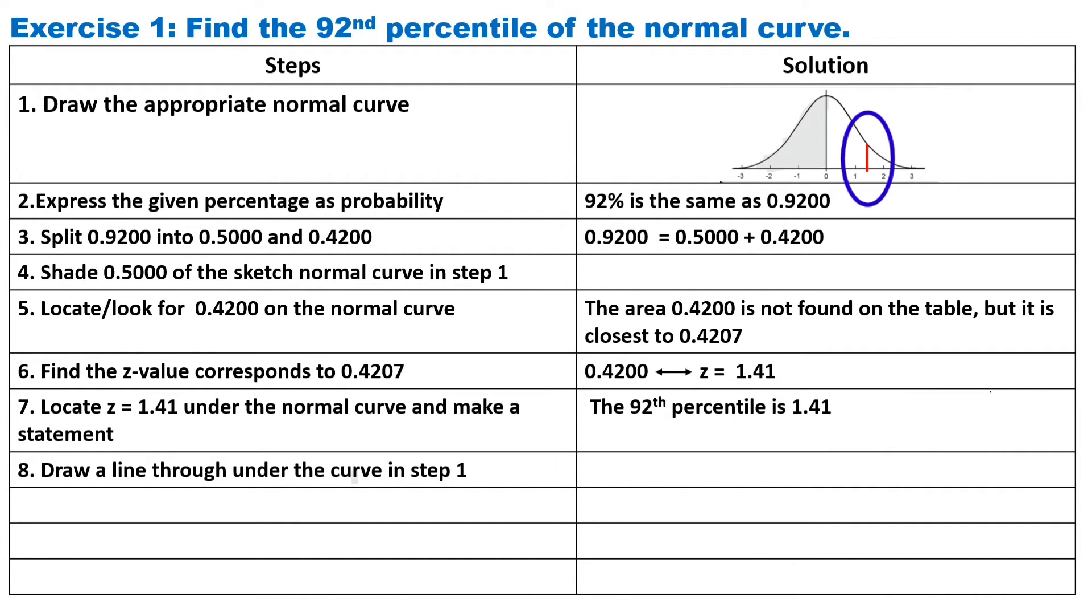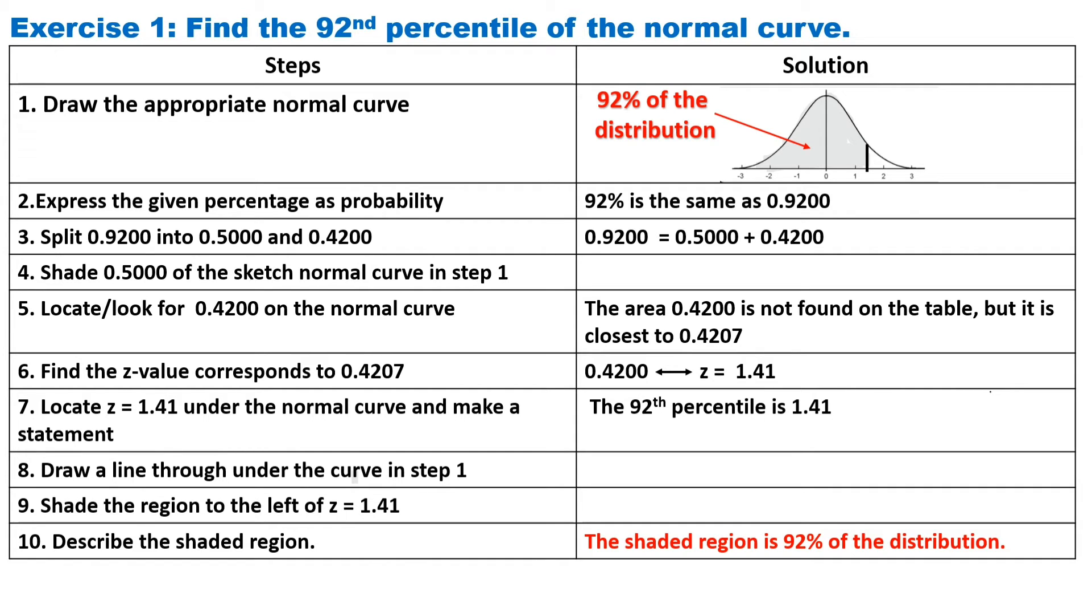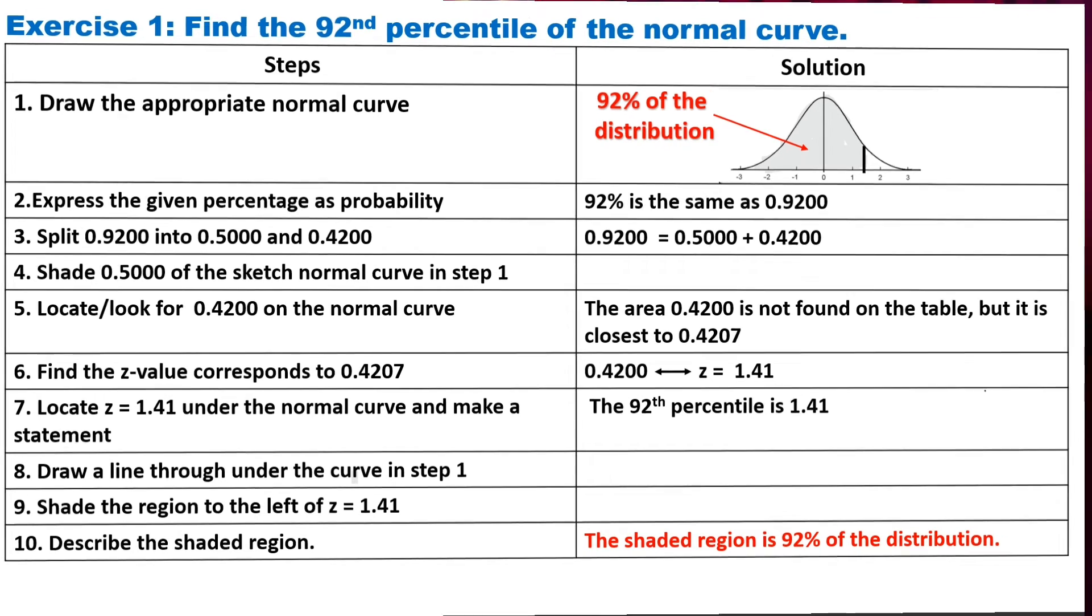Step eight, draw a line through under the curve in step one corresponds to the Z-score equivalent to 1.41. Step nine, shade the region to the left of Z equals 1.41. And step 10, describe the shaded region. The shaded region is 92% of the distribution.